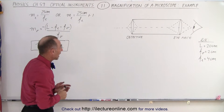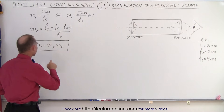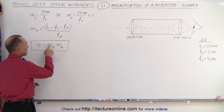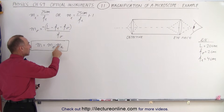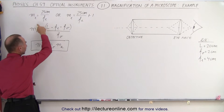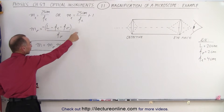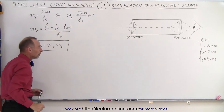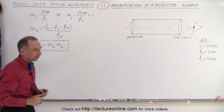The magnification of the microscope is the product of the magnification of the objective and the magnification of the eyepiece. The magnification of the objective — we found the general equation in the previous video.